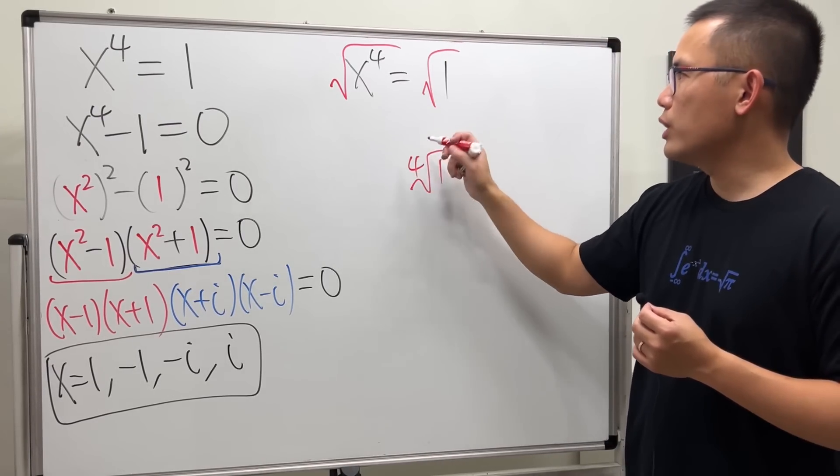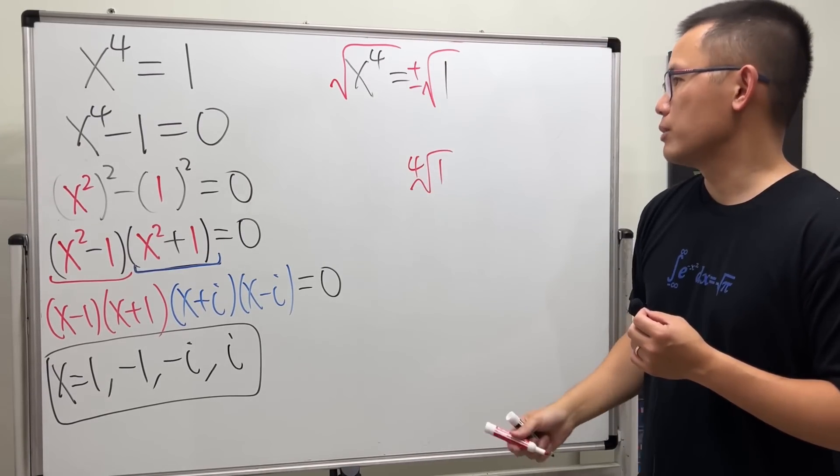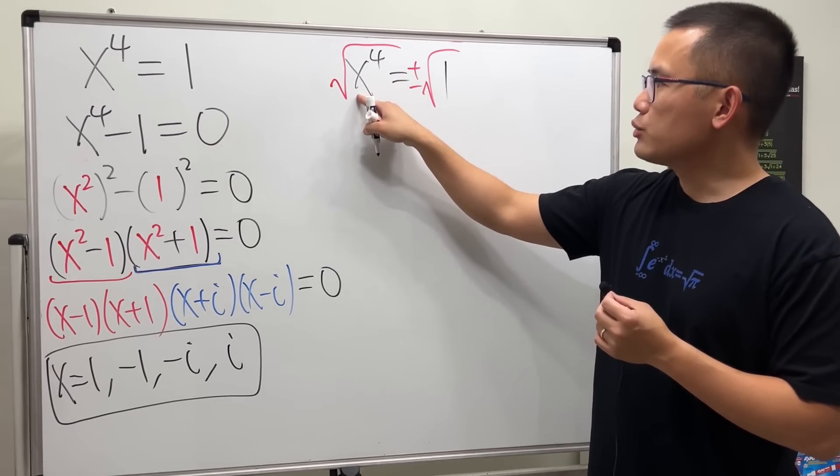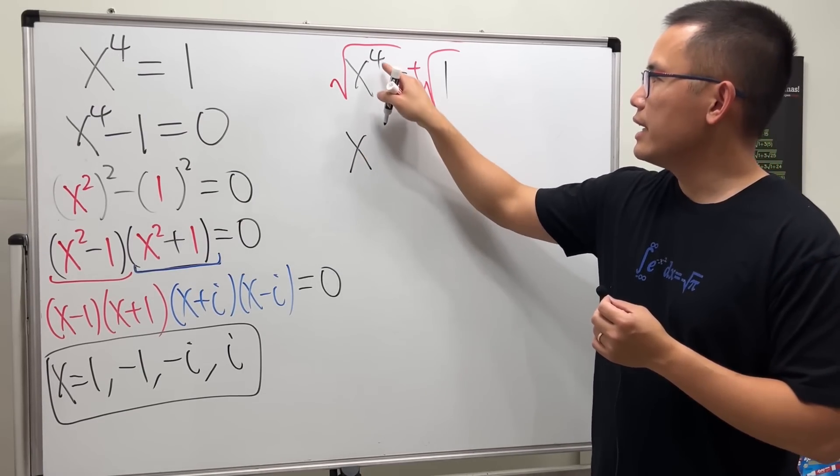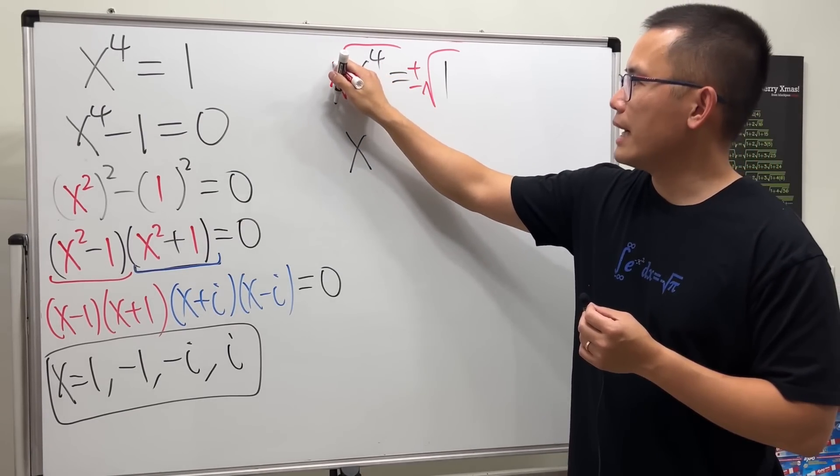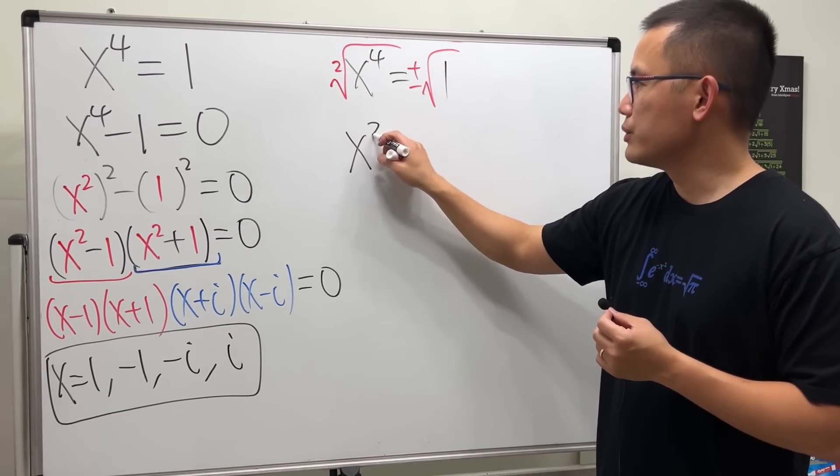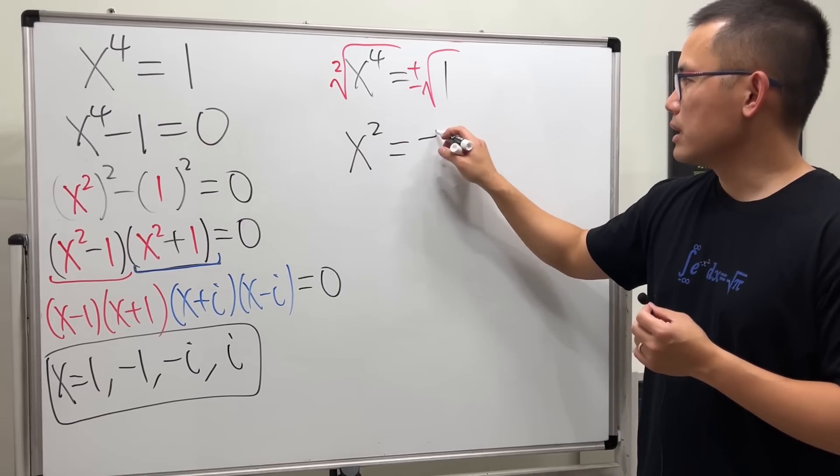So, I'm just going to take the square root to both sides. And remember, when we take the square root to both sides, don't forget the plus or minus. On the left-hand side, this gives us x to the power of 4 divided by 2, and we will end up with 2. And that will give us plus or minus 1.